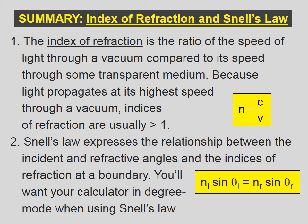The index of refraction is the ratio of the speed of light through a vacuum compared to its speed through some transparent medium. Because light propagates at its highest speed through a vacuum, indices of refraction are usually greater than one, unless the light is traveling through empty space or something very nearly empty space. Snell's Law expresses the relationship between the incident and refractive angles and the indices of refraction at a boundary. You'll want your calculator in degree mode when using Snell's Law.